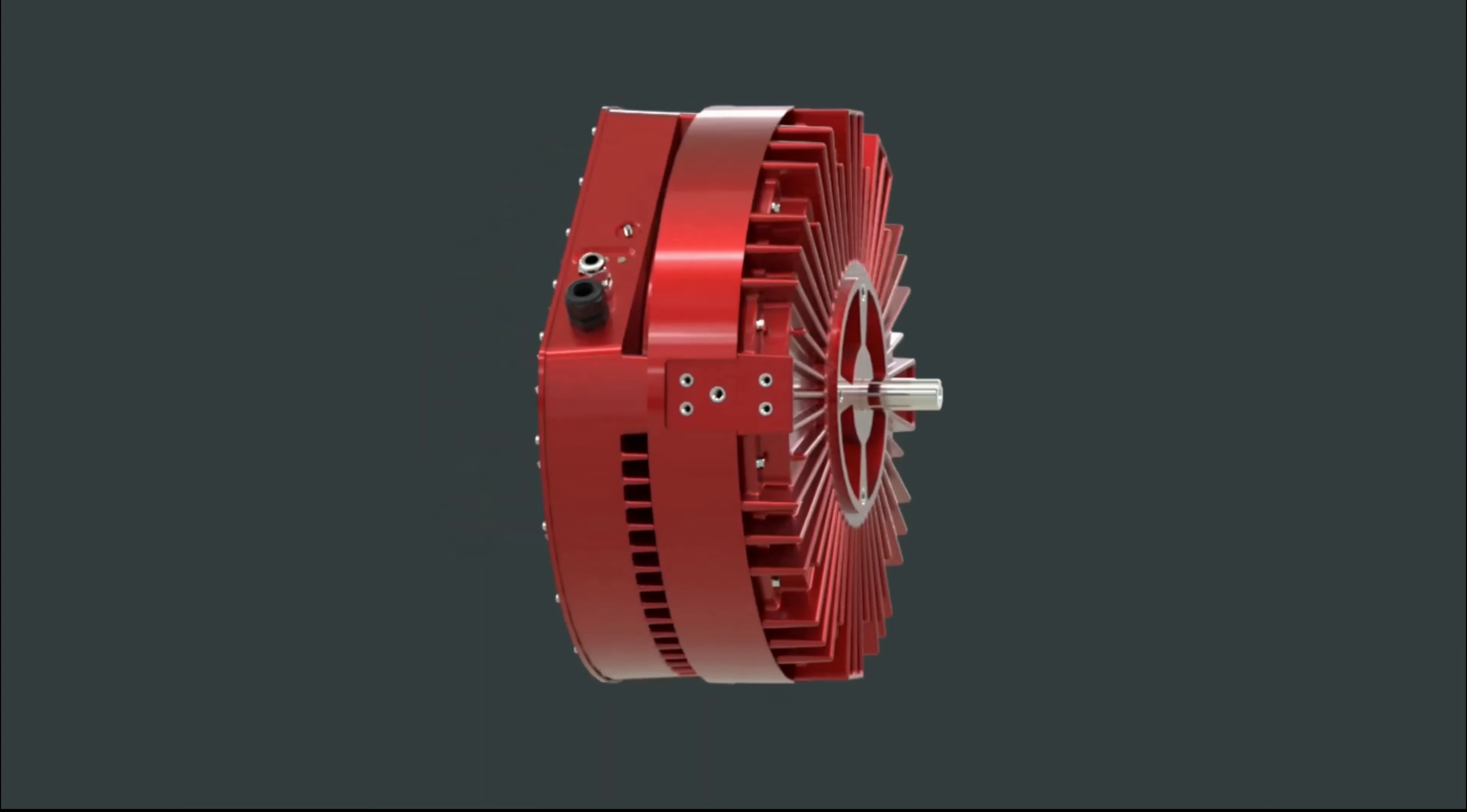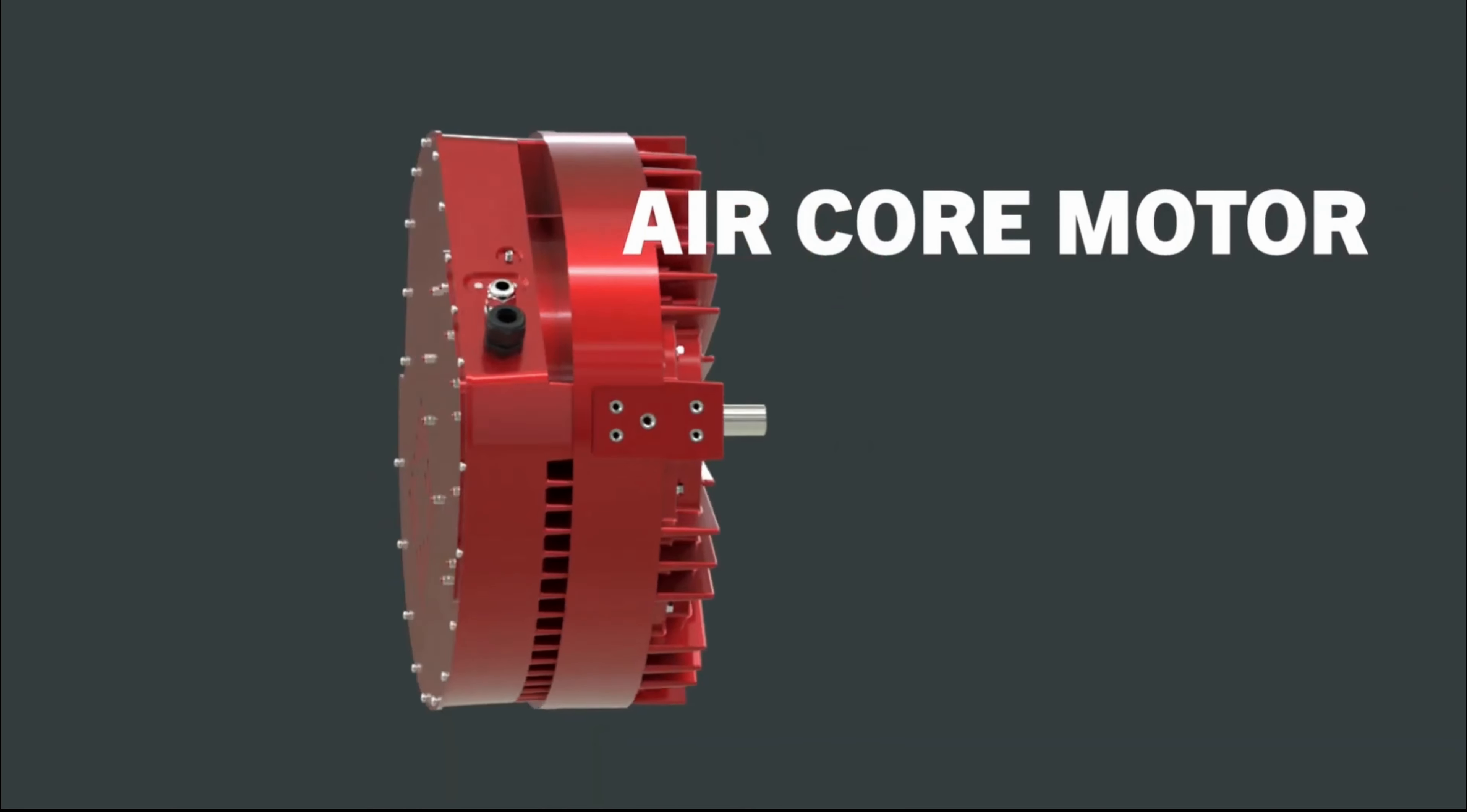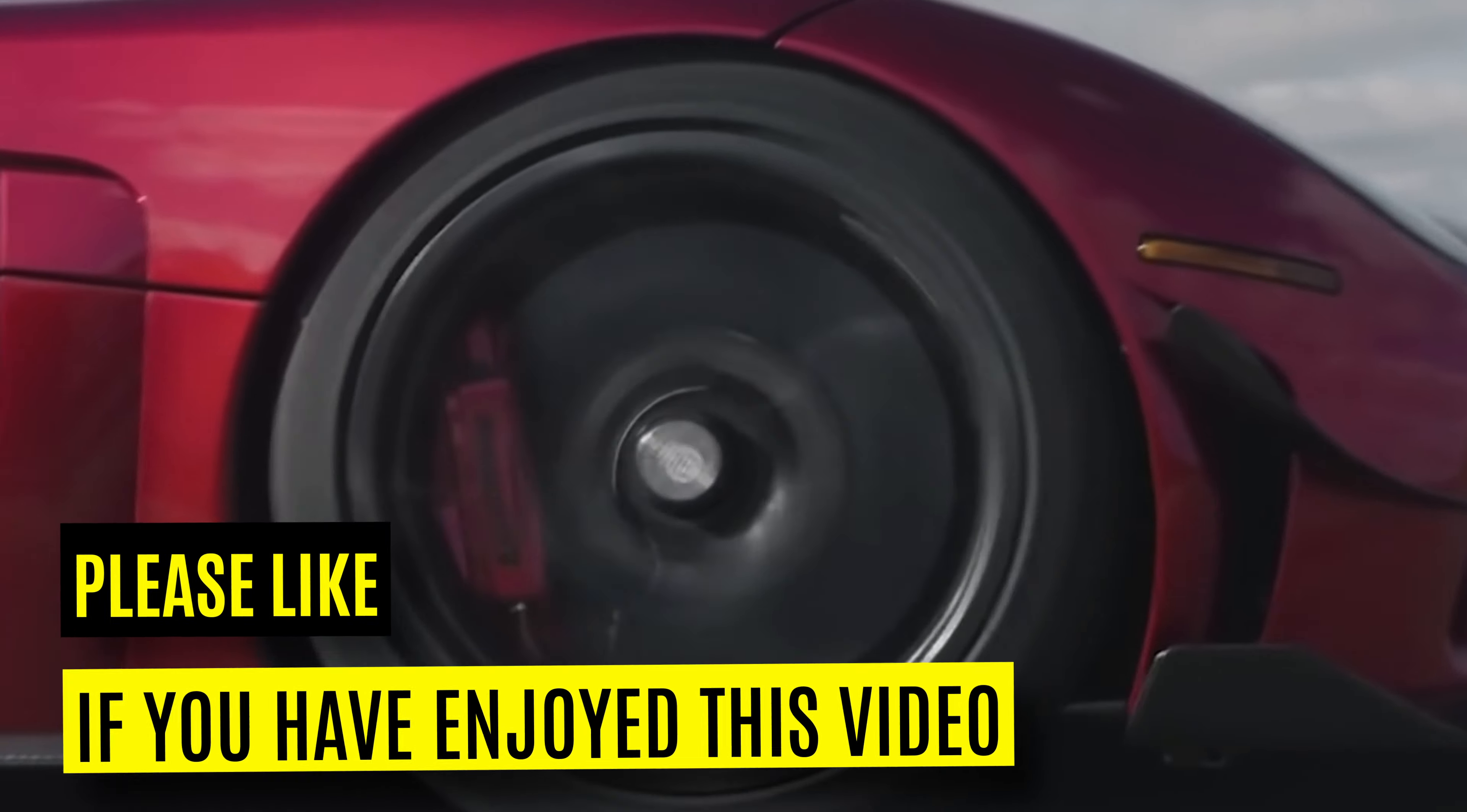A number of companies are working to overcome those difficulties and one of the examples is Infinitum Electric. They use stator made out of using PCB technology to overcome the difficulties in manufacturing the wound up status. This makes the axial flux motor even more compact and easier to manufacture.